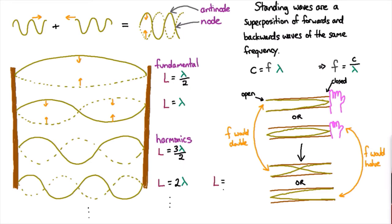And if both ends are open or both ends are closed, then the length is related to the wavelength in the following way, where n is one, two, three, and so forth. If you have this case where you have one open and one closed,